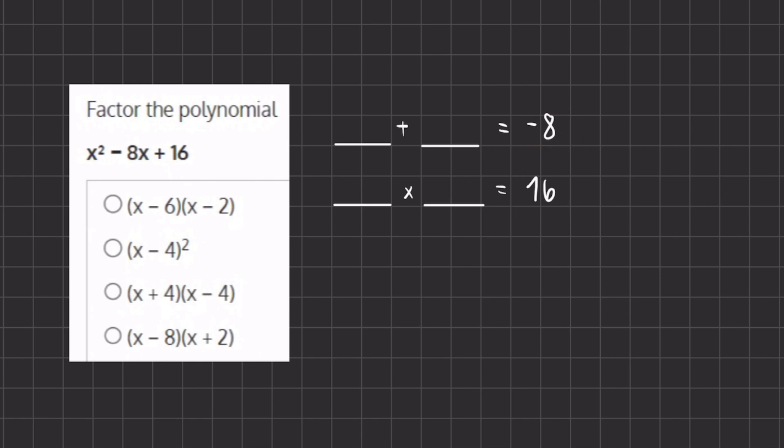Now in order to find these two numbers, it is always easier to list out the multiples of the 16, of the number you're multiplying. So we have 1 times 16, we have 2 times 8, and we have 4 times 4.